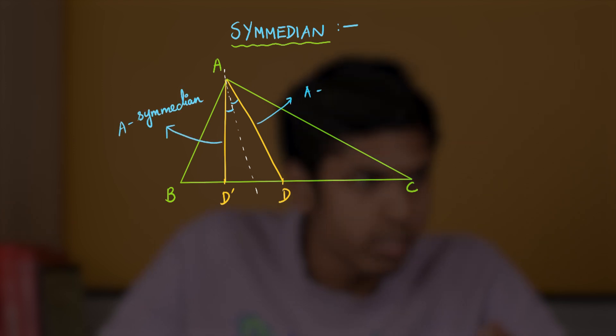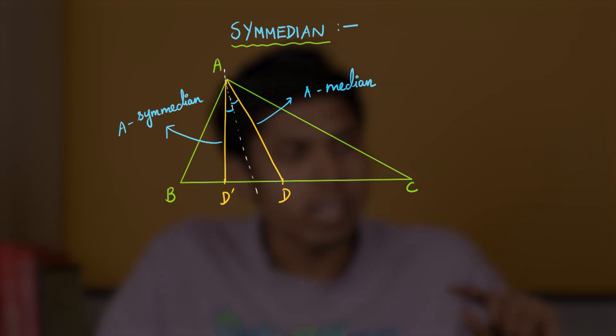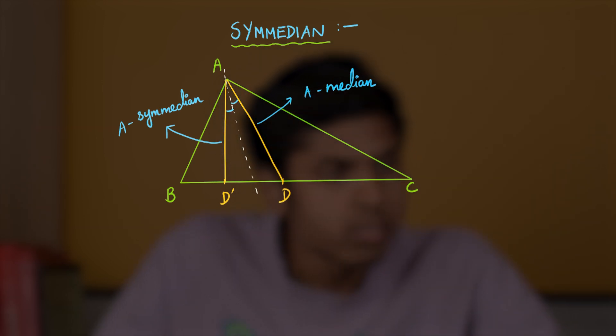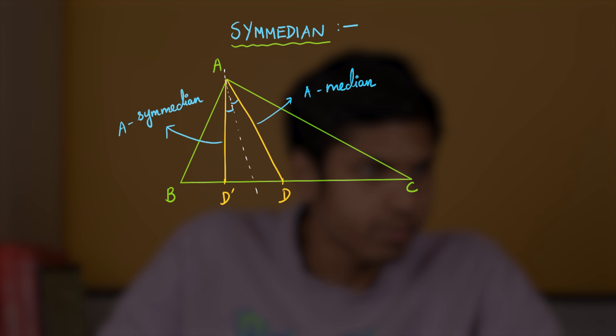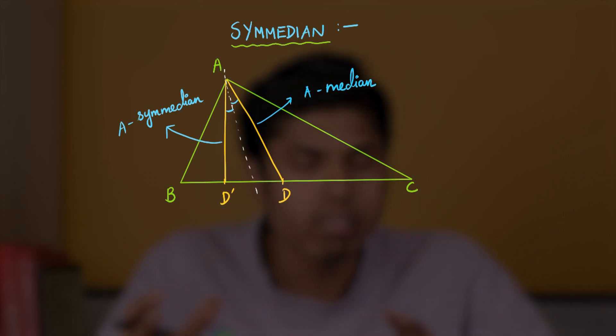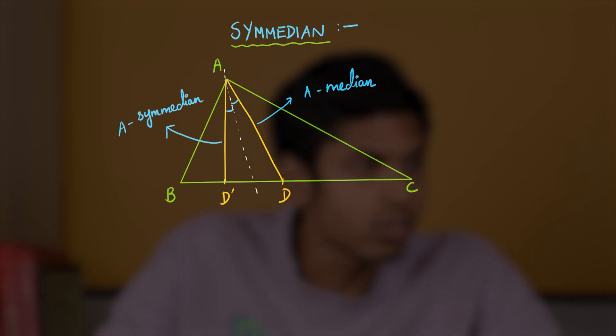This is our A-median. Similarly, we can define B-C-median as the reflection of B-median about the angle bisector at B. Same goes for C. So, the properties of C-median are crucial to understand in our Dumpty Point properties.